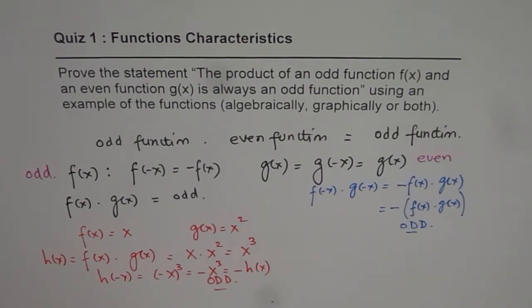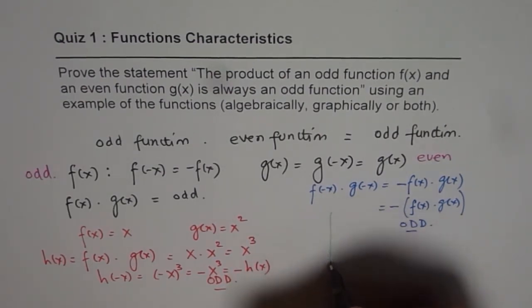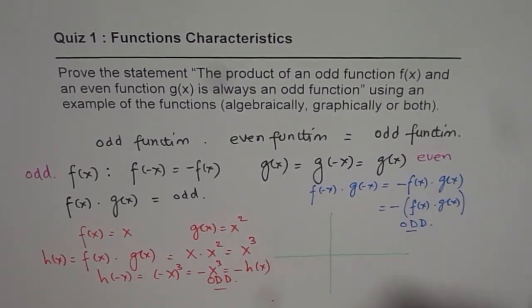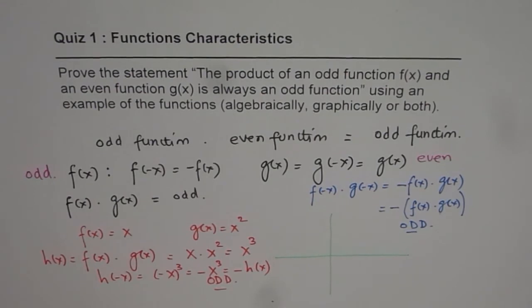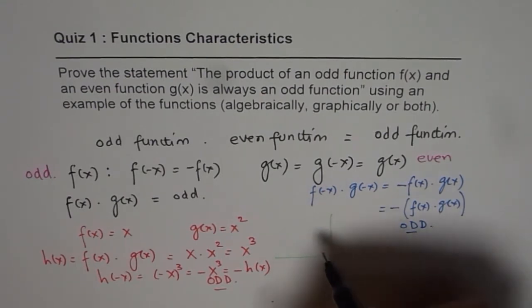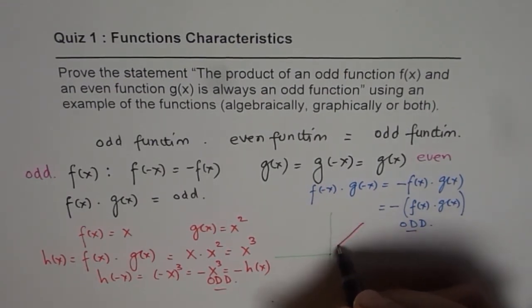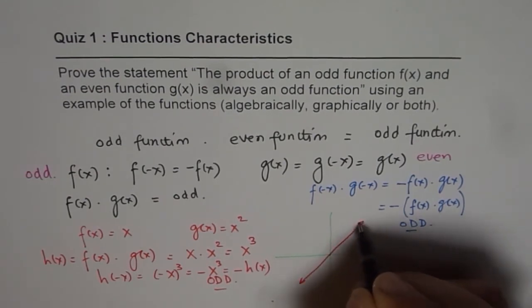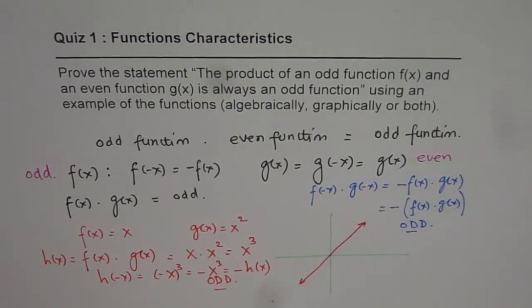Now, graphically also, you can show by sketching a graph. In our case, let's take the example which we took. That is to say, a straight line, y equals x. So that is odd function. And then we can combine it with a parabola, which is x squared.